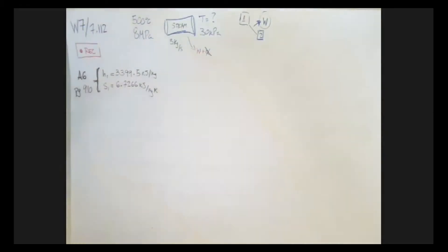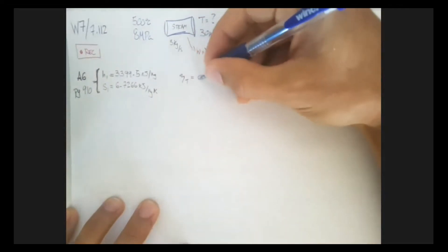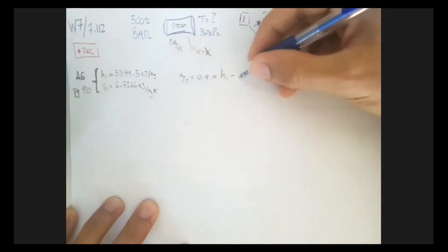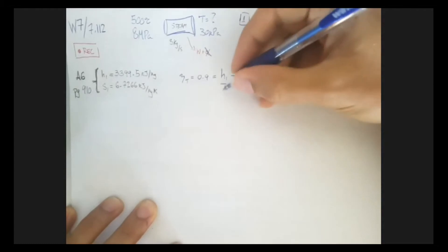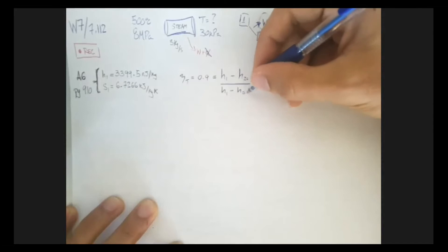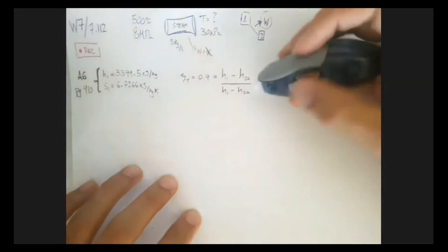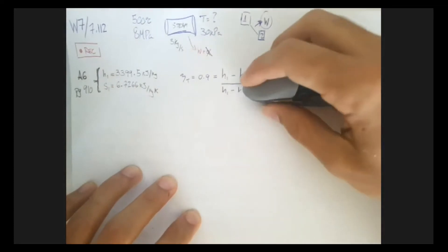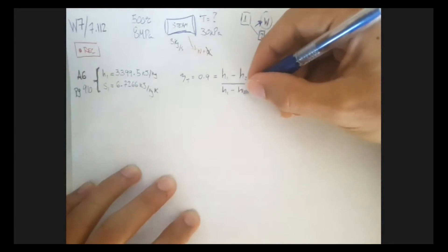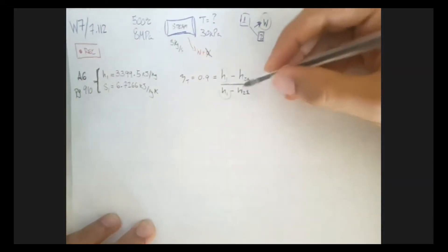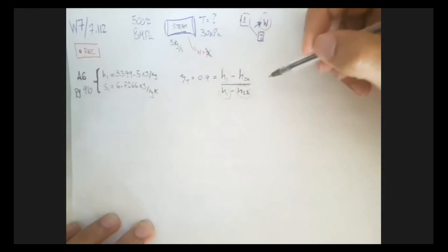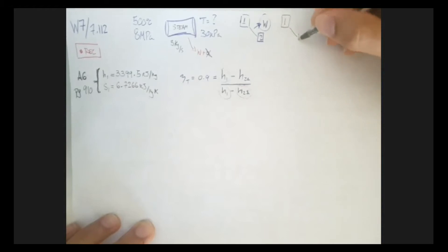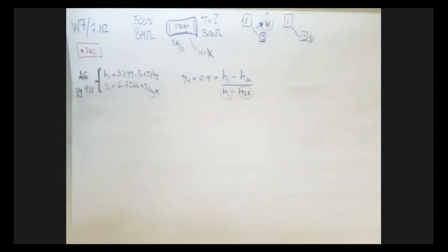Since this is a turbine and the efficiency is 90%, 0.9, we know that this efficiency is related to the difference in H1 minus H2 actual, divided by the work that could be done if we had an isentropic process with no irreversibility. That's not supposed to be A, it's supposed to be S. So we have H1 that was quite easy to get. Now we don't have this guy yet, but we can determine it, because we can determine this imaginary state in which the pressure is still going to be 30 kilopascals, but the other thing we're going to grab is the entropy, and the entropy has to be the same as the first one. That will be our imaginary state 2s.